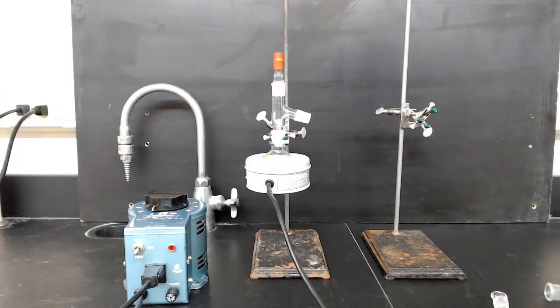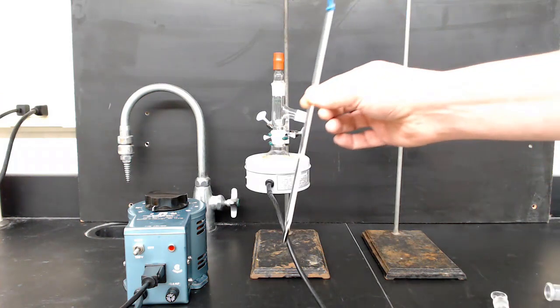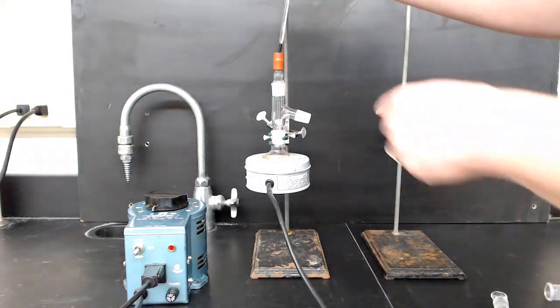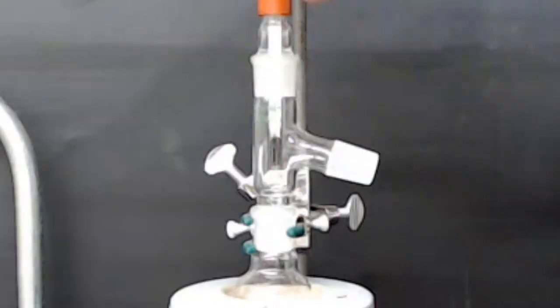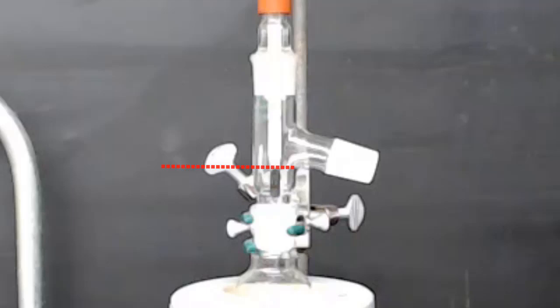Next, push the thermometer through the rubber boot and into the apparatus. You want to make sure that the bulb is in the right location. This is important for getting an accurate temperature. The bulb should be just below the elbow of the three-way distillation head, as shown here in this picture.